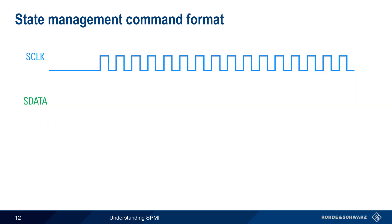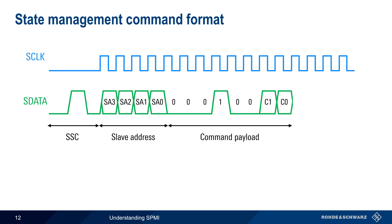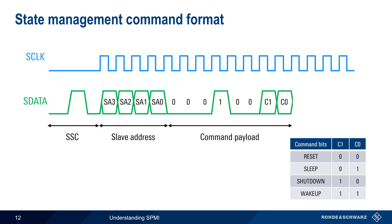The four state management commands we just looked at all have the same format. They begin with the sequence start condition, followed by the four-bit address of the slave whose state is being changed. Next comes the command payload. The first part is a fixed pattern, and the last two bits are used to indicate which of the four state management commands is being sent — reset, sleep, shutdown, or wake-up. As usual, the command payload includes a parity bit, and correct reception by the slave is signaled by means of the bus park ACK procedure described earlier.